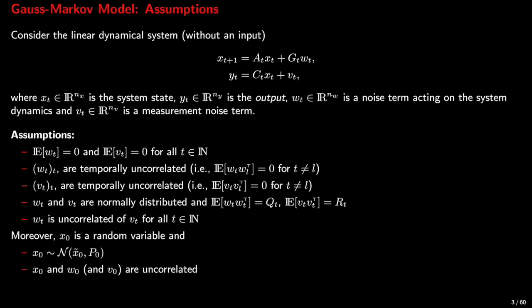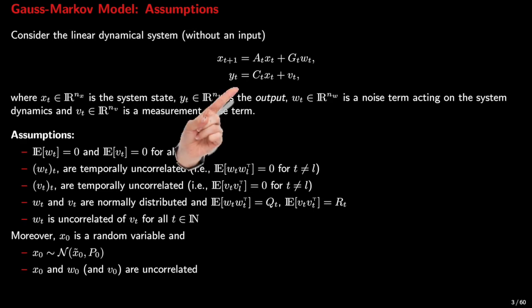Moreover, the initial state is considered unknown and is treated as a random variable with known mean and variance, and it is uncorrelated from W_0. We should emphasize that the state and the output of the system are random variables. This system is assumed not to have an input for the sake of simplicity, but the results can be extended to the case where we have linear systems with an input acting on them.